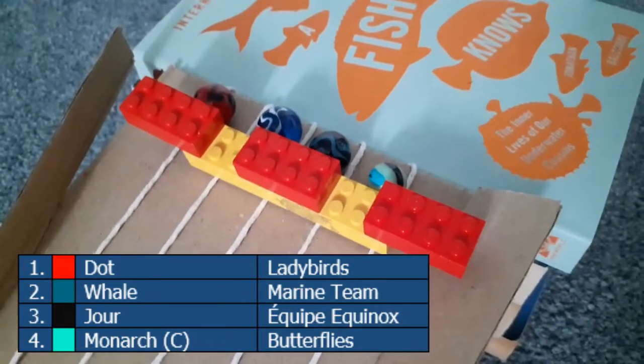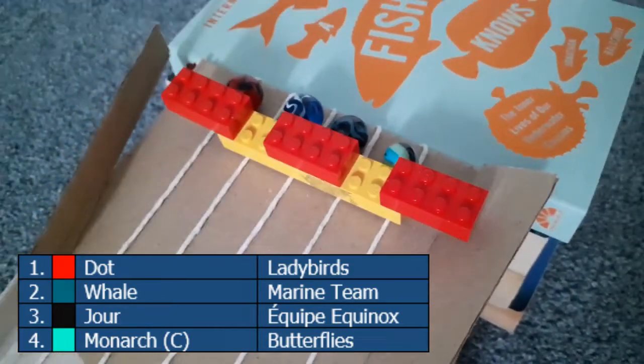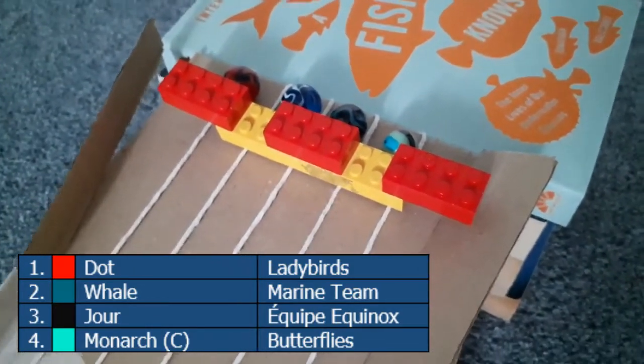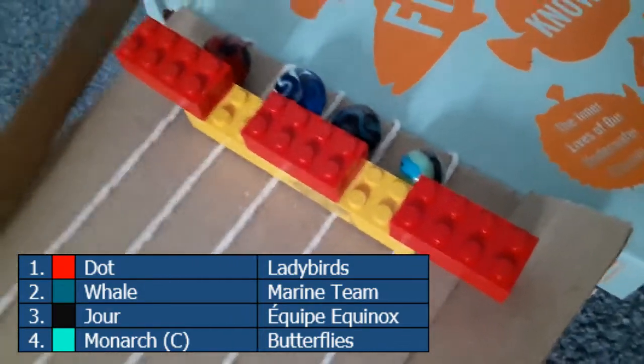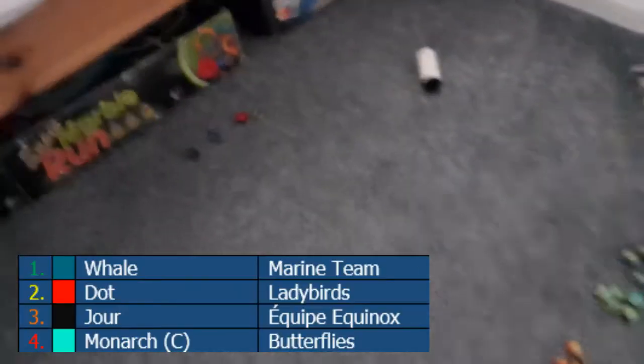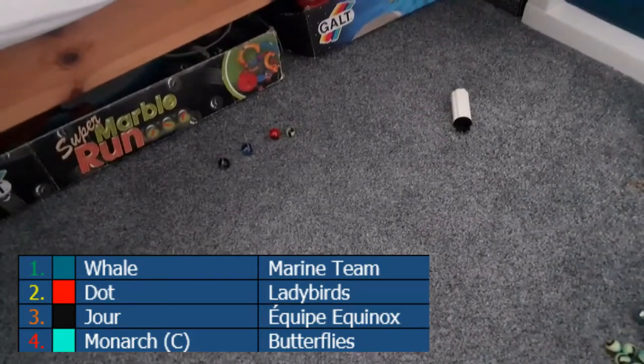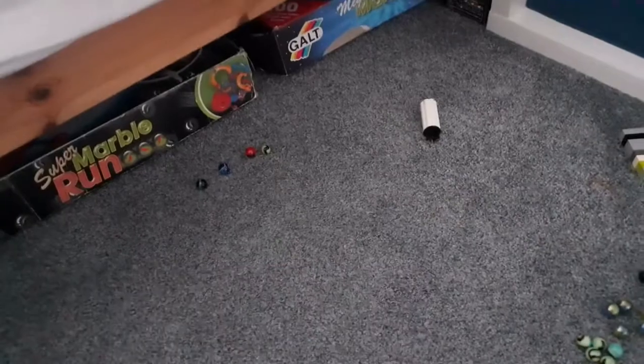Now I have Ladybirds, Marine Team, Equipe Equinox, and Butterflies. Two Bird Teams and a Sprint Medalist, as well as the overall winners in the pre-qualifiers. Whale, a very strong sprinter, as we know for sure. And we're off, the Whale has got the lead! Ladybirds, Butterflies in last there. That was an easy one, don't need to look at any replays for that one. Marine Team, Ladybirds, Equipe Equinox, and Butterflies, in that order.